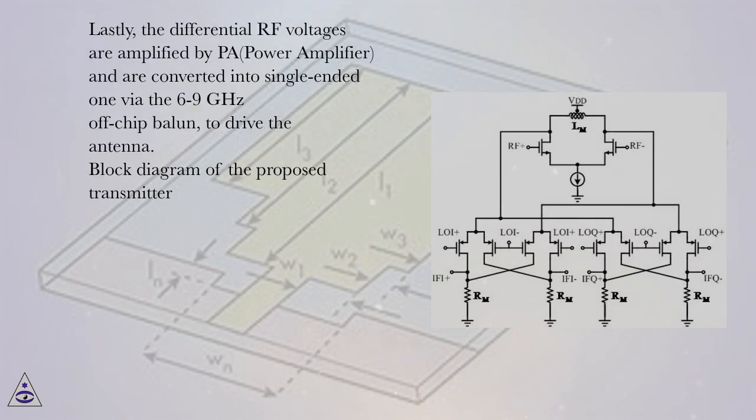Lastly, the differential RF voltages are amplified by PA, power amplifier, and are converted into single-ended one via the 6 to 9 GHz off-chip ballon, to drive the antenna.